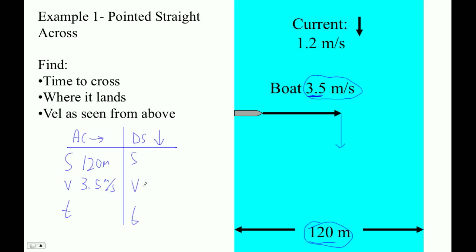Downstream, we don't know the displacement, but we do know the velocity is the current downstream. And that's the only velocity downstream, since the boat is pointed straight across.